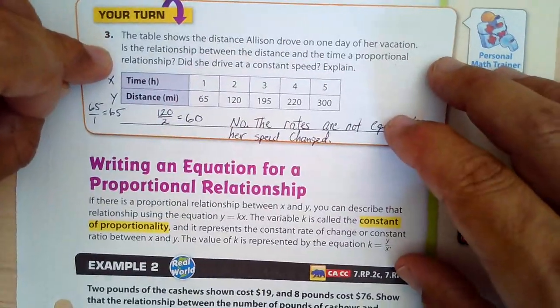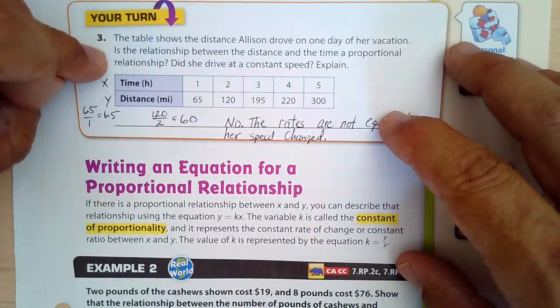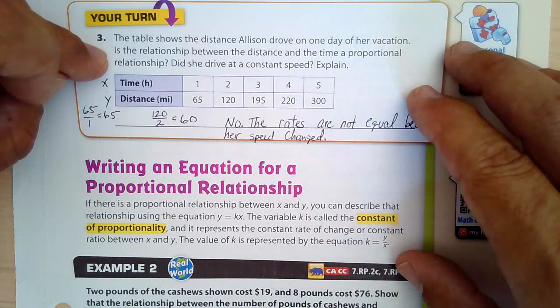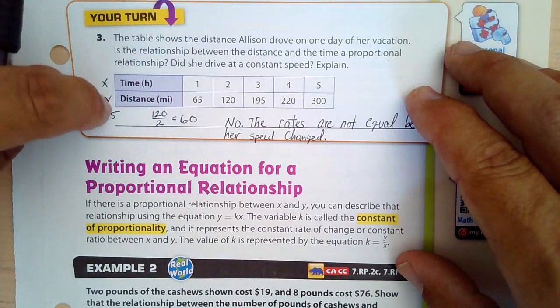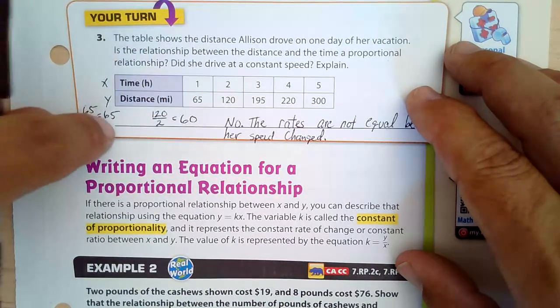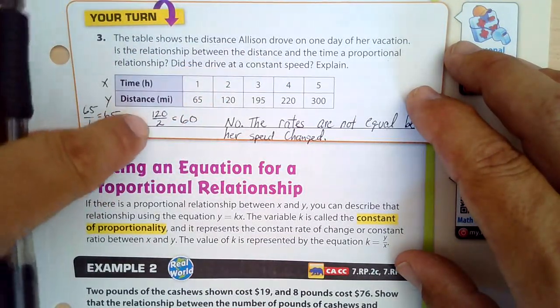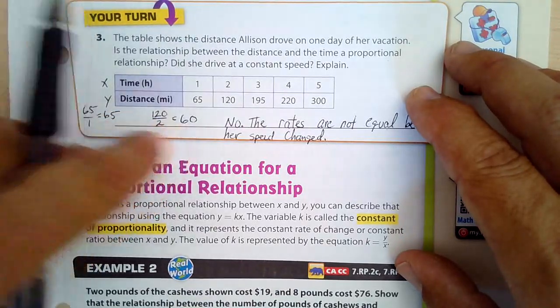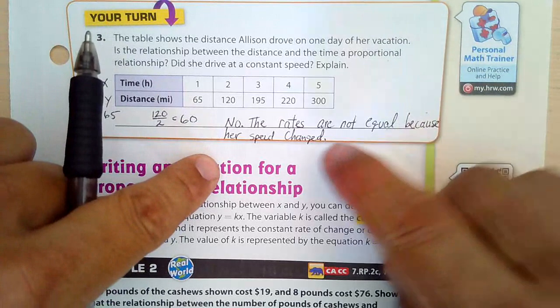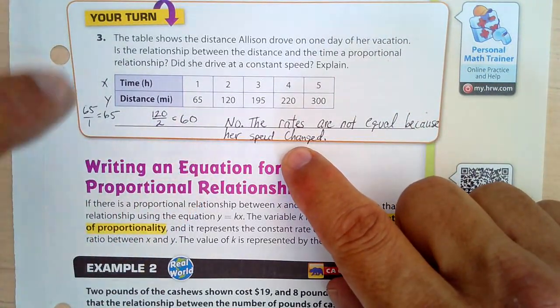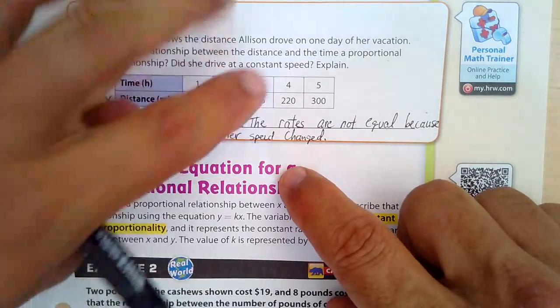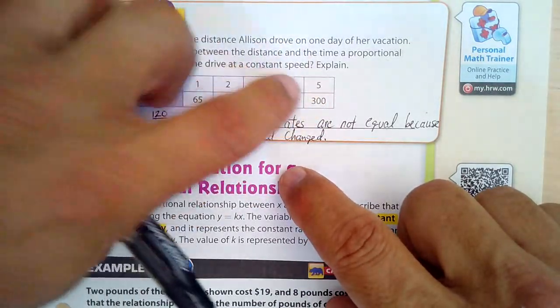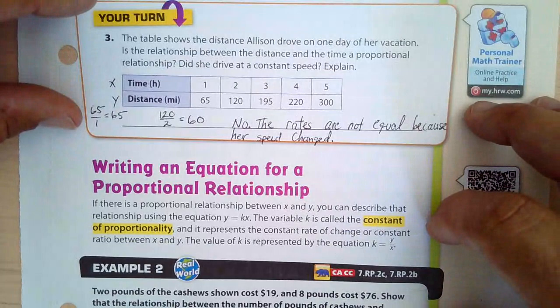So what we have is this. On the next page, 125, the table shows the distance Allison drove one day on her vacation. Is the relationship between the distance and time a proportional relationship? Did she drive at a constant speed? Well, I took our X and Y. Okay. Y over X, 65 over 1. 65 divided by 1. That's easy. That's 65. And I took 120 over 2. 120 over 2. Well, 120 divided by 2 is 60. Right there, it's already broken. The rates are not equal because their speed has changed. It went from 65 miles per hour to 60 miles per hour. And if one of them's off, then the whole thing, doesn't matter if all the rest of them are still 65. It's not a constant speed.